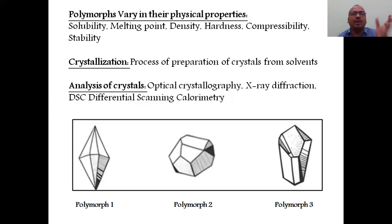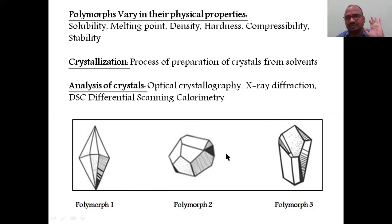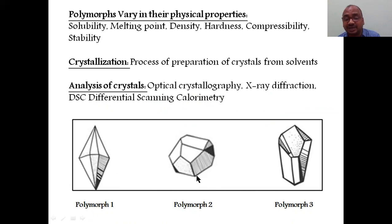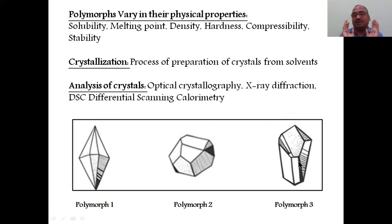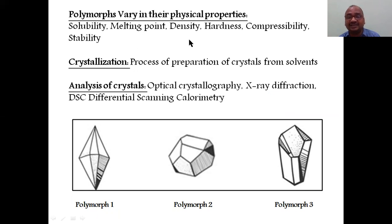Polymorphs vary in their physical properties. All polymorphs contain the same drug, but when you change the crystalline form, some physical characters also change. Physical properties of polymorph one will not be exhibited by polymorph two or three. They are physically unequal, but therapeutically they show the same pharmacological action.